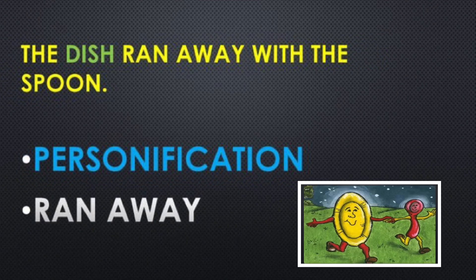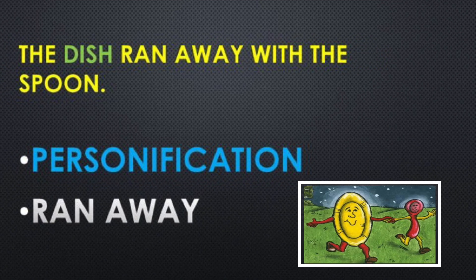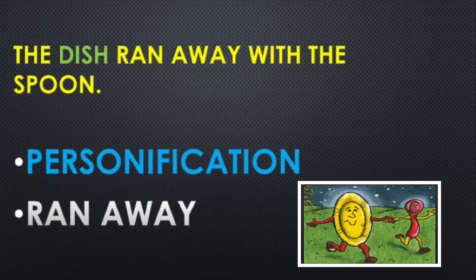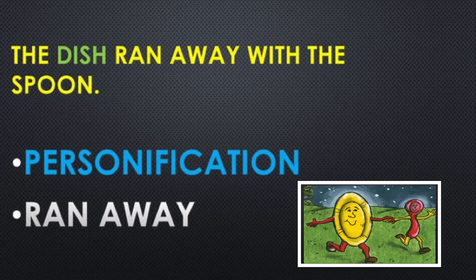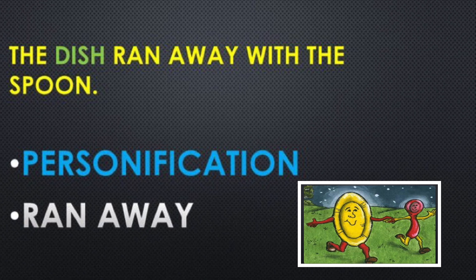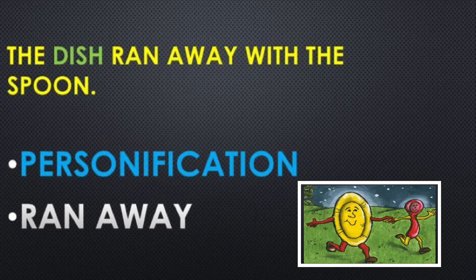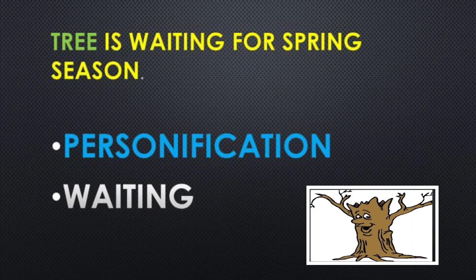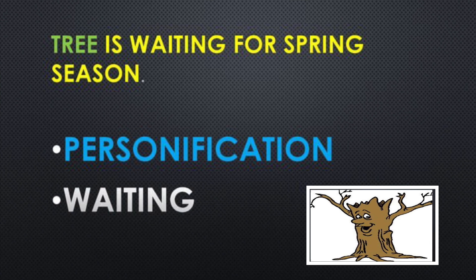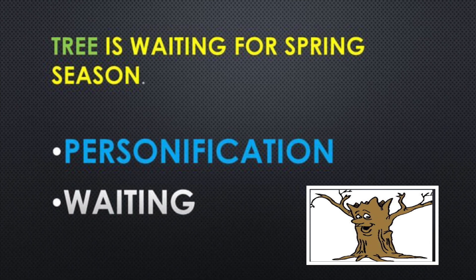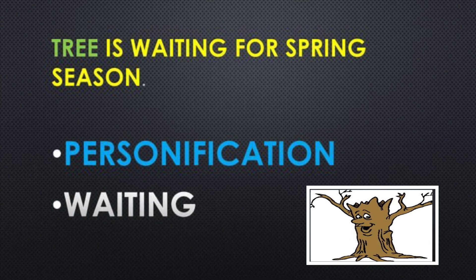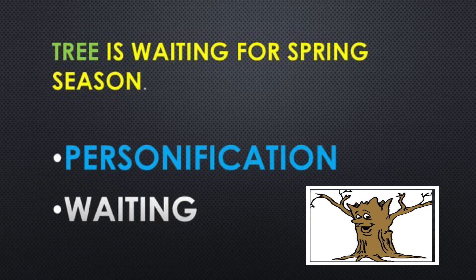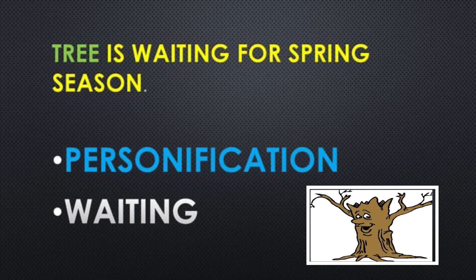Very interesting! 'The dish ran away with the spoon.' Dish kabhi bhaag sakti hai, lekin woh spoon ke saath bhaag gayi — that means a non-living thing was given the human quality 'ran away.' 'Tree is waiting for spring.' Tree jo wait kar raha hai — to wait karne ki quality human being ki quality hai, jo ke non-living object tree ko yahan par dhe di gayi. So which literary device is used here? Yes, you are right — personification.